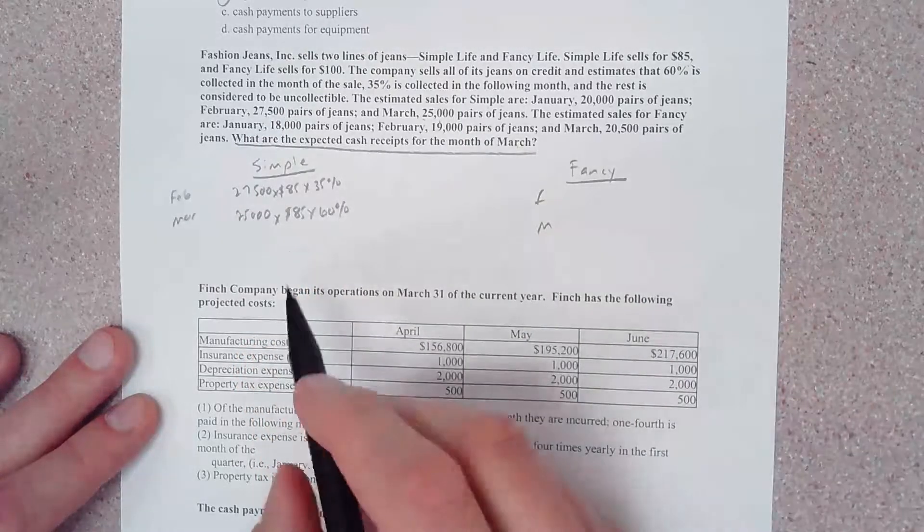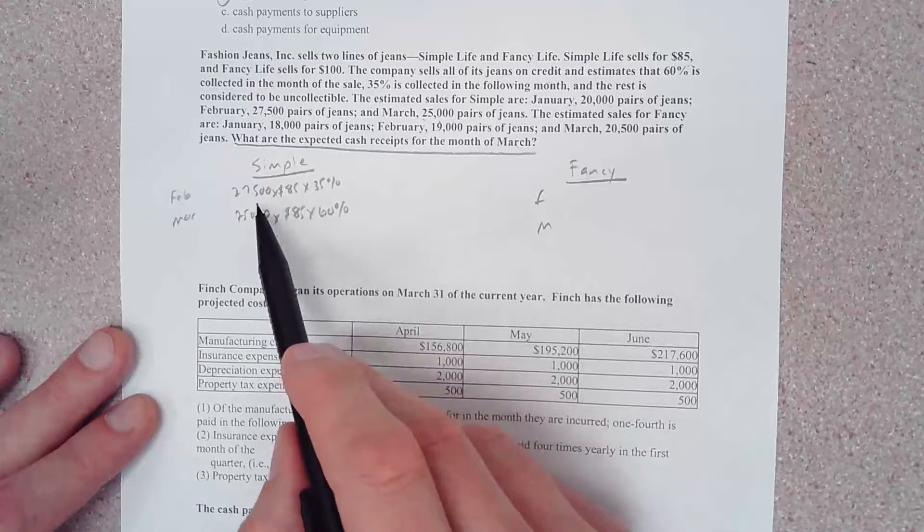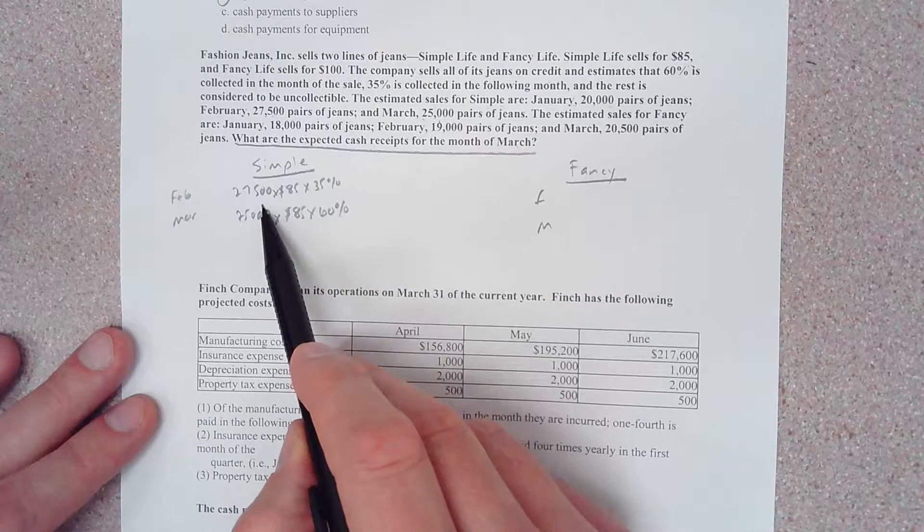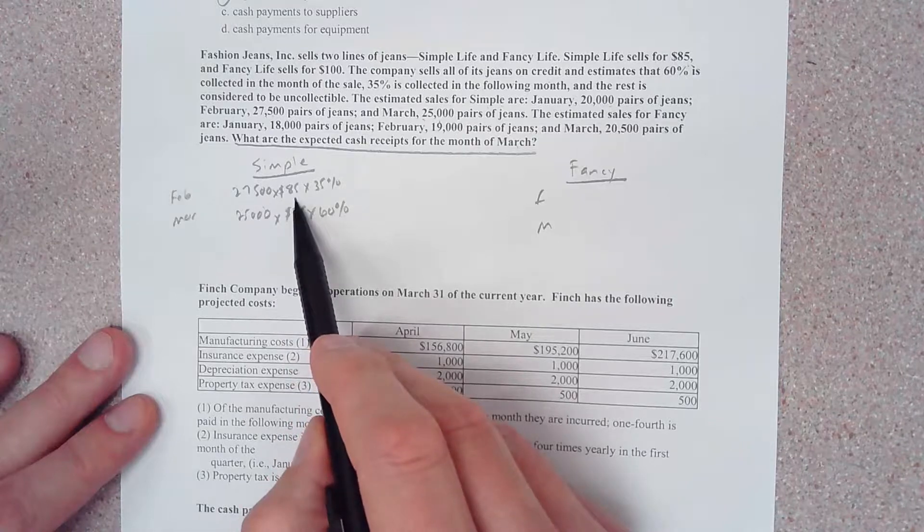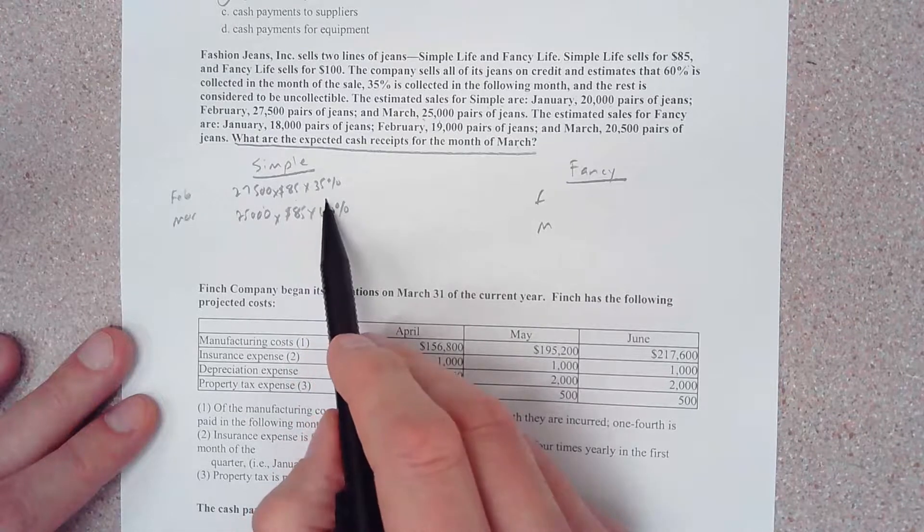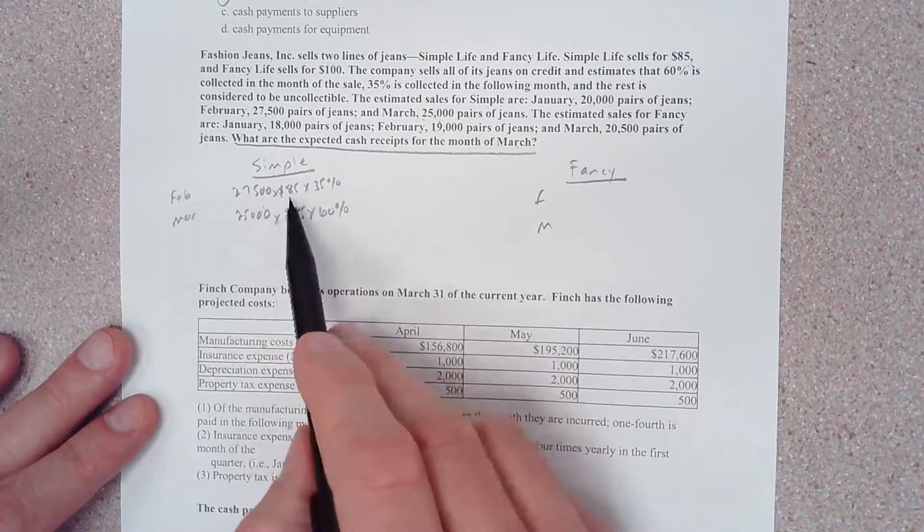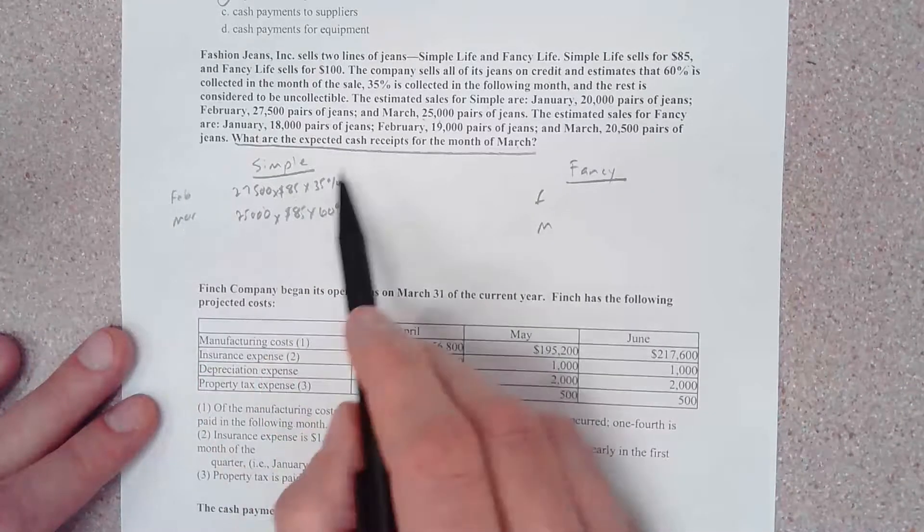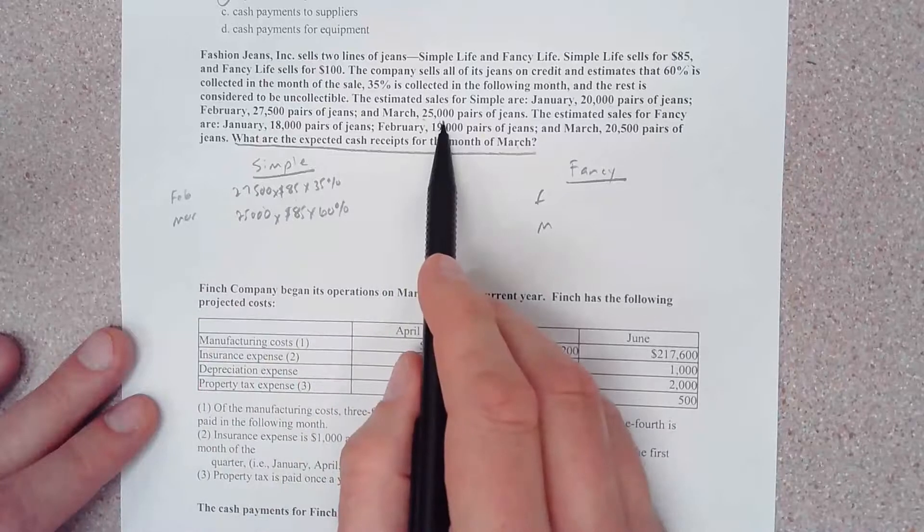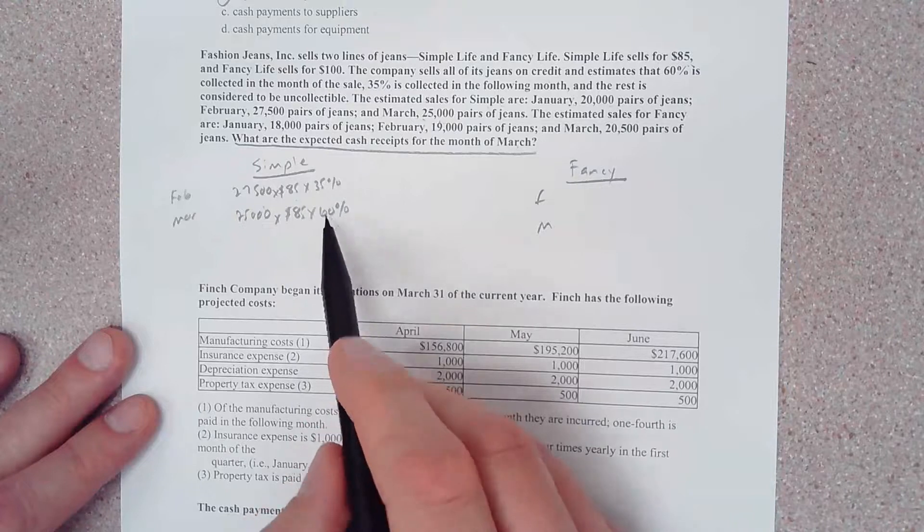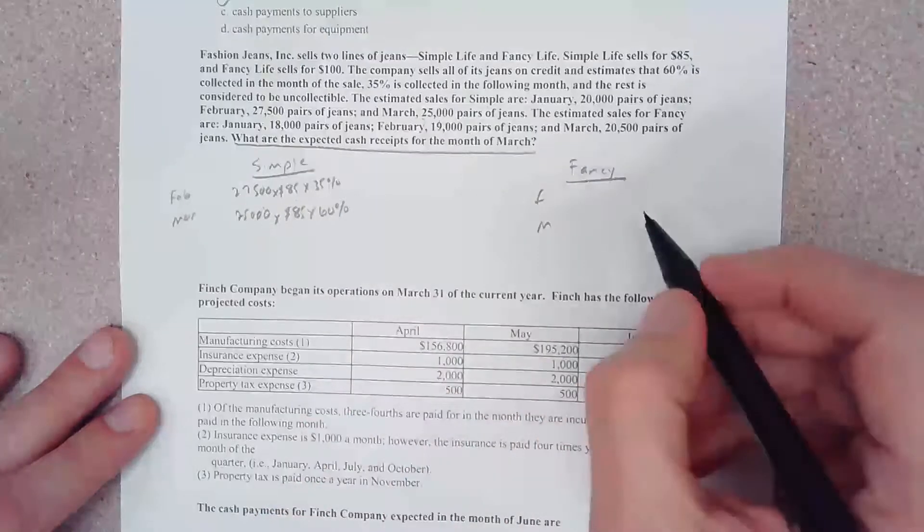In February we sold 27,500 pairs, but we sold them for $85 a piece on credit. We're going to collect 35% of that in the month of March. These are February sales. For March sales, we sold 25,000 pairs of these Simple jeans times the same $85. We're going to collect 60% in the month of March.